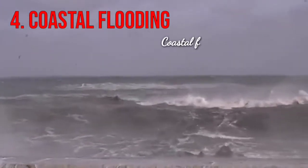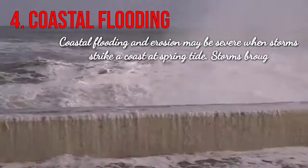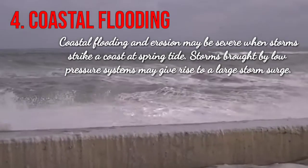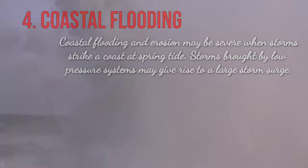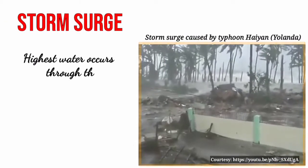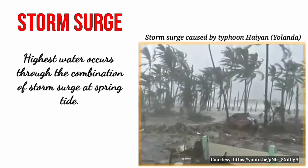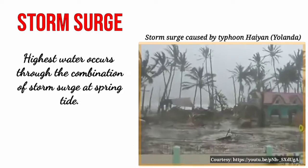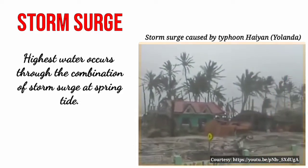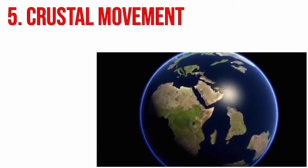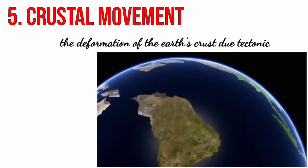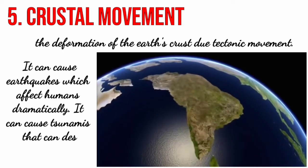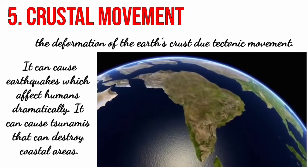Next, we have coastal flooding. Coastal flooding and erosion may be severe when storms strike a coast at spring tide. Storms brought by low-pressure systems may give rise to a large storm surge. Highest water occurs through the combination of storm surge at spring tide. Fifth, we have crustal movement, or the deformation of the earth's crust due to tectonic movements. It can cause earthquakes which affect humans dramatically, and it can cause tsunamis that can destroy coastal areas.